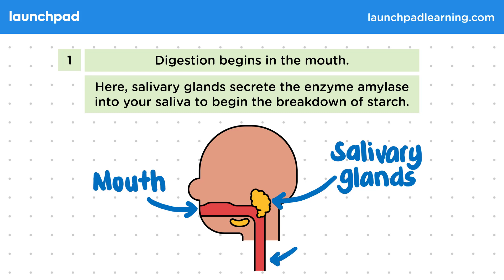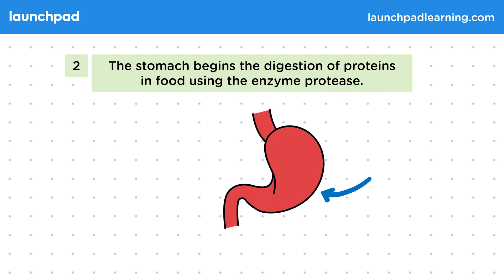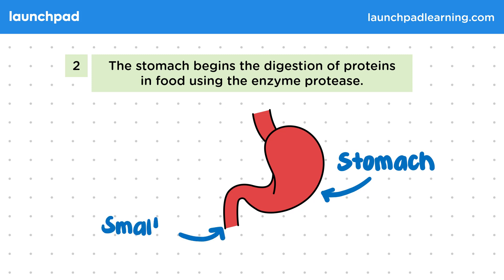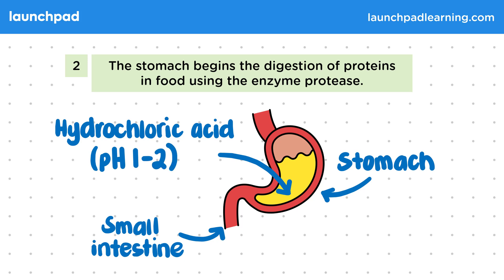The esophagus is a thin tube that connects the mouth to the stomach. The stomach begins the digestion of proteins in food using the enzyme protease. Inside the stomach is hydrochloric acid, which has a pH of 1 to 2 — not to break the food down, but to reduce the pH within the stomach to the optimum level for protease to work effectively.